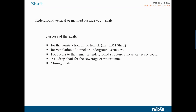What is a shaft? A shaft is an underground vertical or inclined passageway. There are many types based on their purpose. For the construction of a tunnel, for example, we have a TBM shaft — we need to provide an entry shaft for launching the TBM. That's your TBM entry shaft or exit shaft. Then for ventilation of tunnels and underground structures, for access, as an escape route, as a drop shaft for sewerage or water tunnels, and for mining shafts — these are the main purposes.